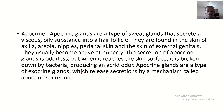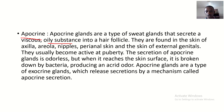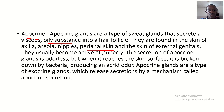Next, apocrine glands are a type of sweat gland that secrete a viscous and oily substance into the hair follicle. They are found in the skin of the axilla, the areola, the nipples, the perianal skin, and the skin of the external genitals. Apocrine glands usually become active at puberty.